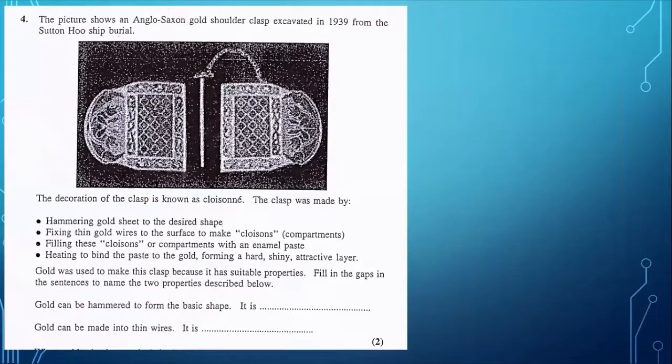This exam question talks about a decoration of an Anglo-Saxon gold shoulder clasp from the very famous Sutton Hoo ship burial. The artefacts from it can be seen in the British Museum. Well worth seeing. It's to do with hammering gold sheet, fixing thin gold wires, filling compartments that are formed with an enamel paste and heating the paste.